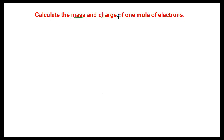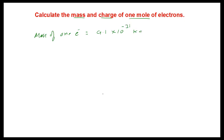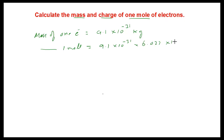Calculate the mass and charge for one mole of electrons — we have to find the total mass and total charge. The mass of one electron is 9.1 × 10⁻³¹ kg. So the mass of one mole of electrons will be the mass of one electron multiplied by Avogadro's number. For one mole of electrons, Avogadro's number is 6.022 × 10²³.